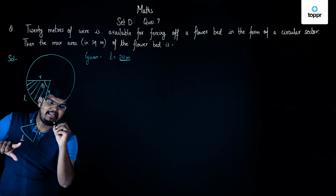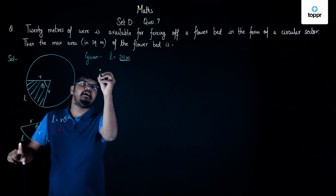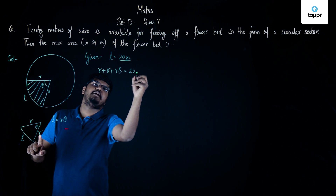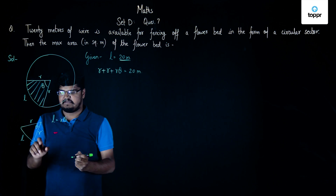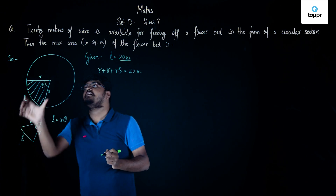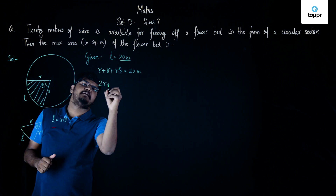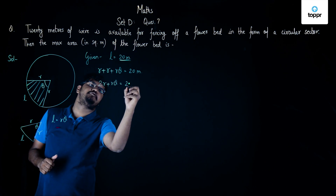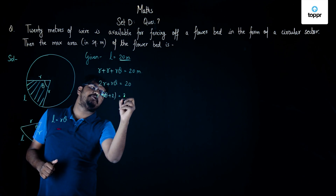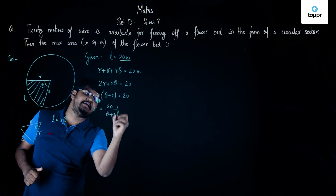We know that L, the length of the arc, is represented as r·θ. So this means r + r + r·θ = 20 meters — that is, the two radii and the length of the arc are covered by this 20 meters of wire. Simplifying, we get 2r + r·θ = 20. Taking r common: r(θ + 2) = 20, so r = 20/(θ + 2) meters.